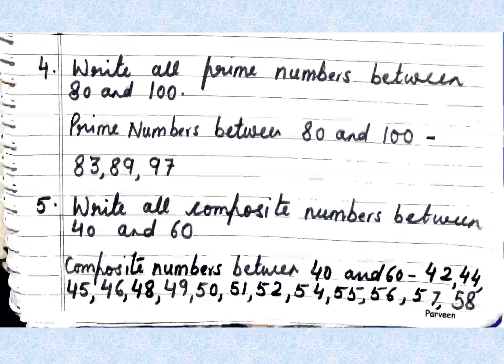Next question: write all prime numbers between 80 and 100. The prime numbers between 80 and 100 are 83, 89, and 97. There is only one prime number from 90 to 100, and that is 97.